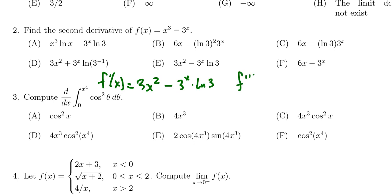To find the second derivative, we'll do the derivative again. Taking the derivative of 3x² gives us 6x. Taking the derivative of negative 3^x times the natural log of 3...